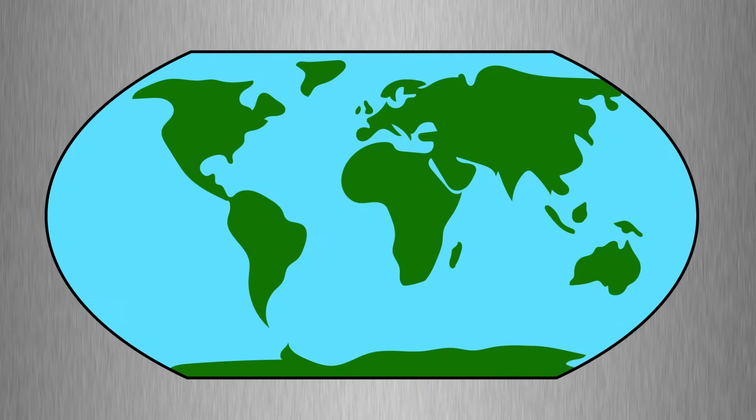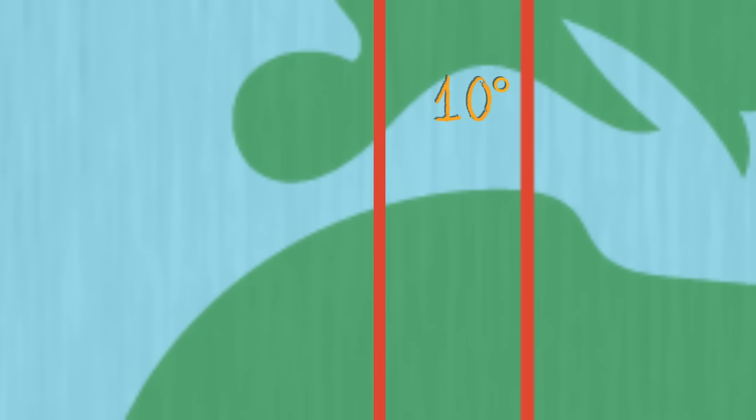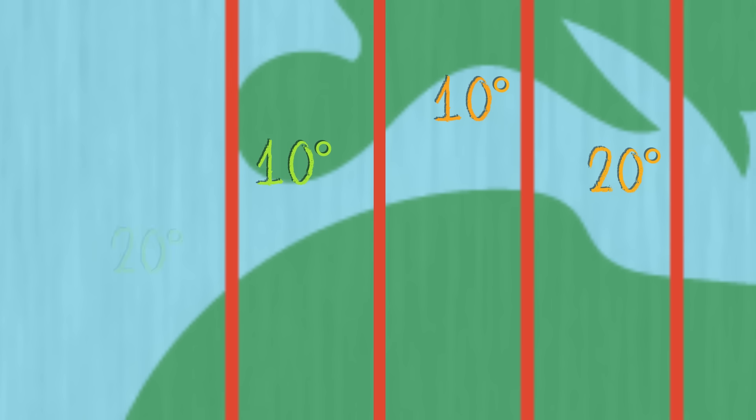Degrees in this case isn't temperature. It's a unit of measure that tells how far away from the center we are. So we start with zero degrees and move away from the center. So this line would be ten degrees and this one would be twenty degrees and so on. And also notice on the other side of zero, the same thing happens. Ten degrees and twenty degrees.